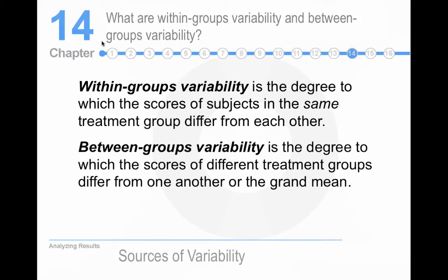What are within-group variability and between-group variability? Within-group variability is the degree to which scores of subjects in the same treatment group differ from each other. So, it's how different you are from the people in your group. That's what within-group variability is. Between-group variability is the degree to which scores of different treatment groups differ from one another and the grand mean. So, between-group variability is how different the treatment groups are from each other.